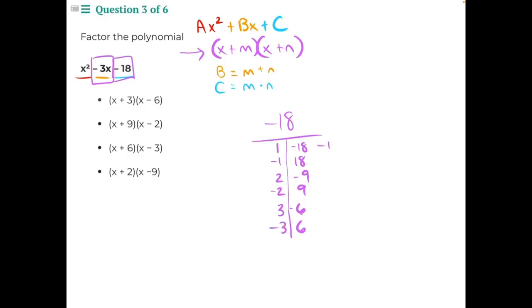1 and negative 18 would be negative 17, so it's not that one. This would be positive 17, so it's not that one. This would be negative 7 and positive 7, both incorrect.